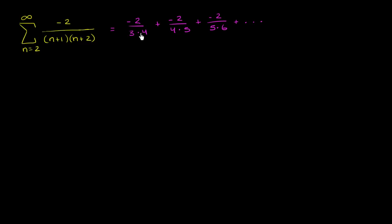Each successive term is getting smaller, and it's getting smaller reasonably fast. So it's reasonable to assume that even though you have an infinite number of terms, it might give you a finite value. But it doesn't jump out at me how to figure out that sum. So I want you to pause and try using partial fraction expansion or partial fraction decomposition to turn this expression into the sum of two fractions — that might help us think about what this sum is.